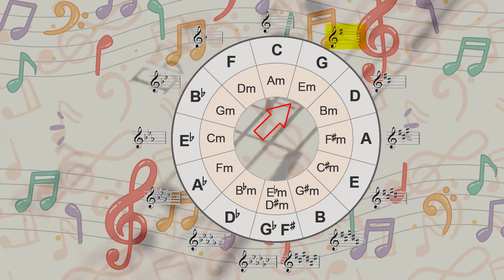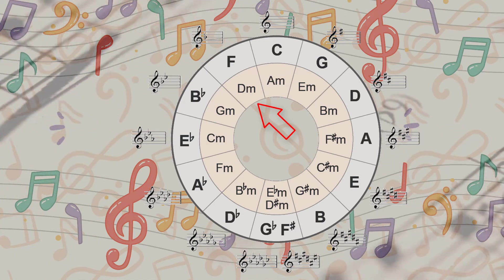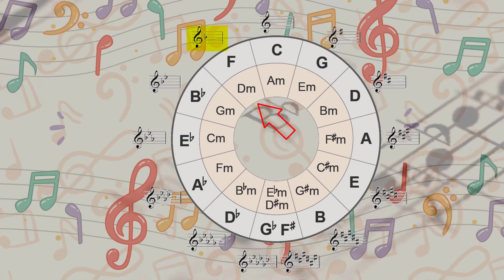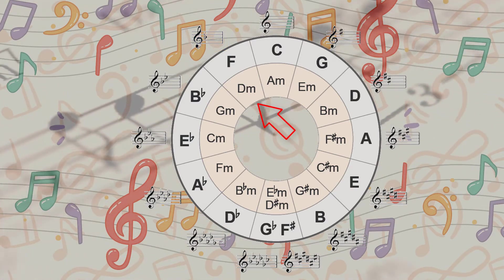Moving counterclockwise to 11 o'clock we arrive at F major or D minor with one flat, starting the journey of keys with flats in them. The distance between each new step in the circle is...